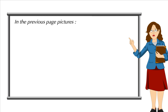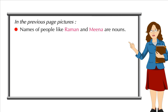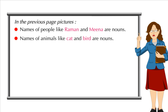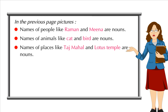In the previous page pictures, names of people like Raman and Meena are nouns. Names of animals like cat and bird are nouns. Names of places like Taj Mahal and Lotus temple are nouns.